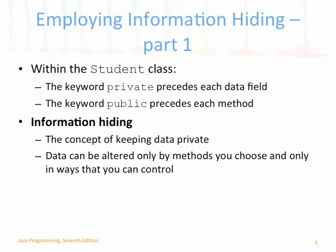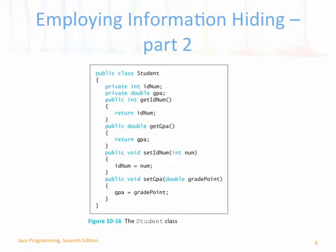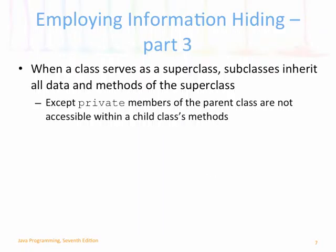You must use access methods to be able to access private data. For example, we have idnum and GPA — those are private — and we use our get and set methods to access them inside the student class.